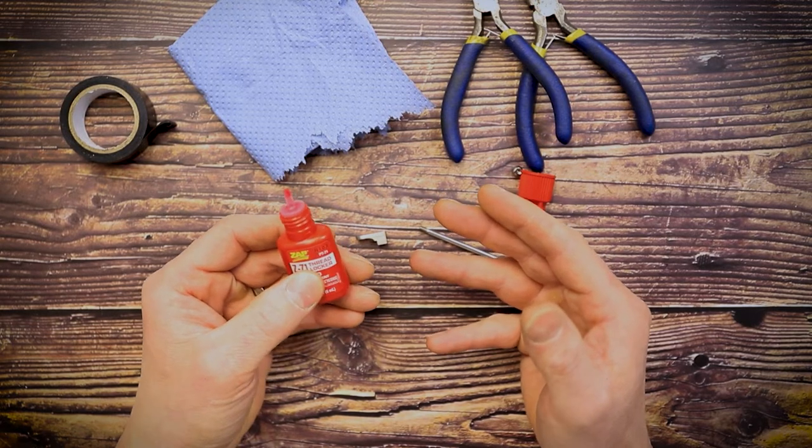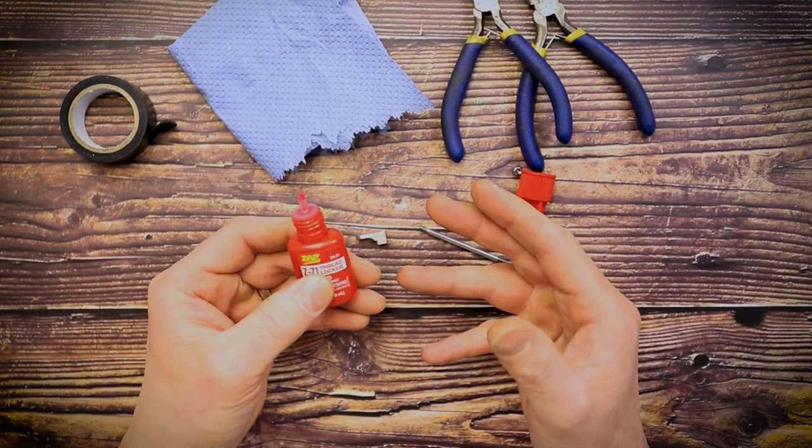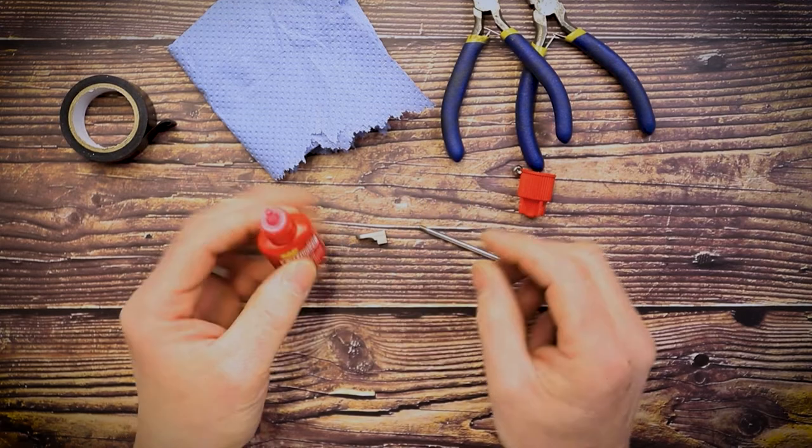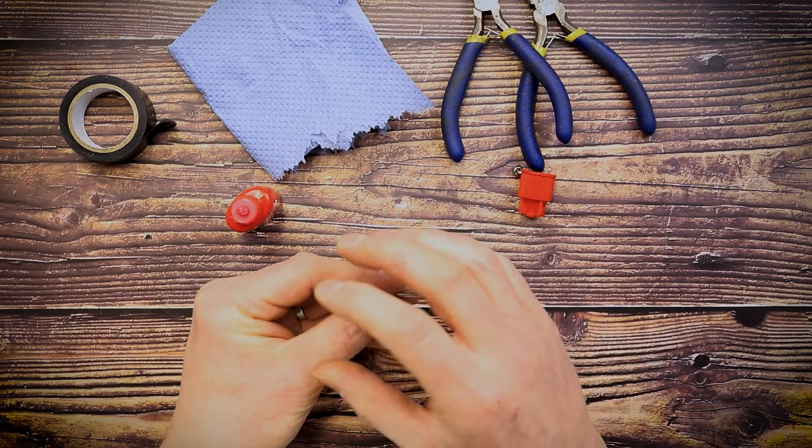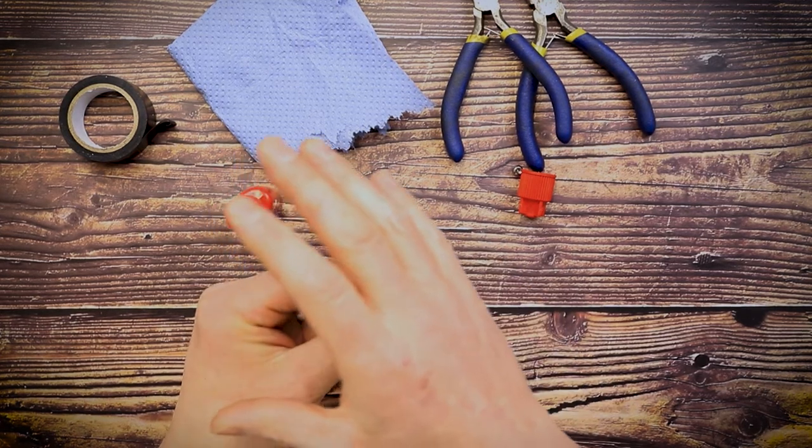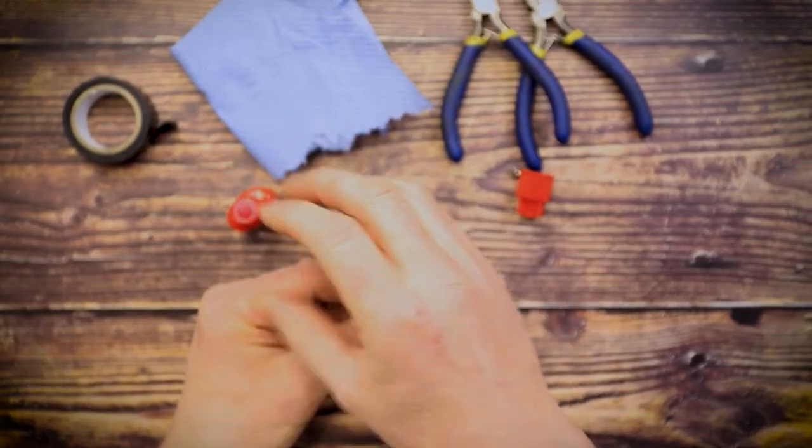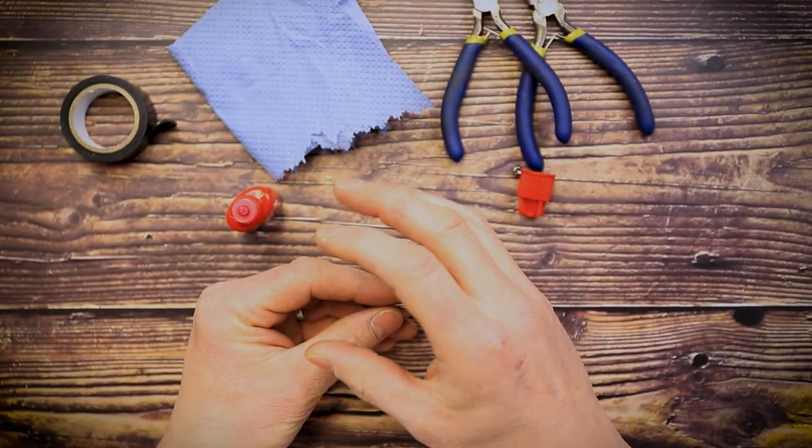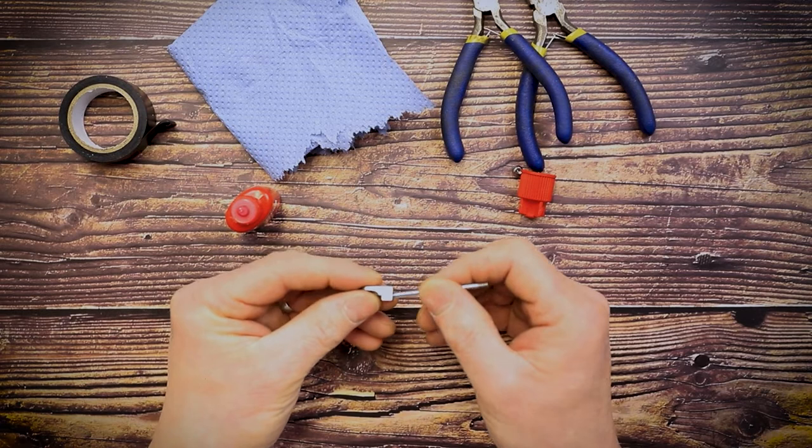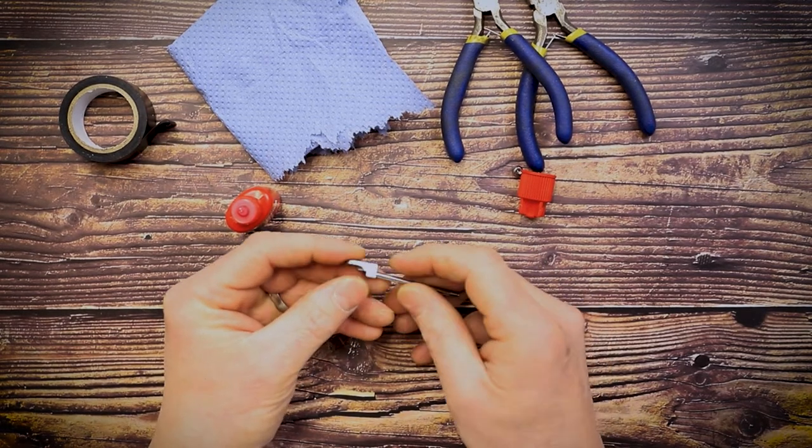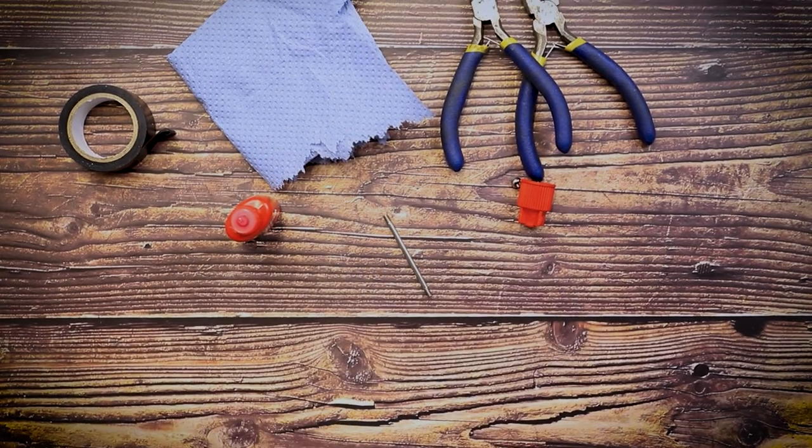That's really important—that it expands and crystallizes and forms a resin. If we nip up two parts really tightly, as that thread lock starts to expand between the threads, what it's doing is locking them into position.